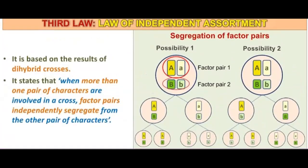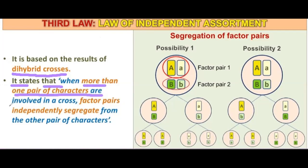The next thing we have is the third law — the law of independent assortment. From the dihybrid cross, independent assortment means that if one gene is expressed as recessive, there is no link that forces the other to also be recessive. If one gene is recessive, the other can be recessive or dominant. There is no rule governing the other. It states that when more than one pair of characters are involved in a cross, factor pairs independently segregate from other pairs of characters.